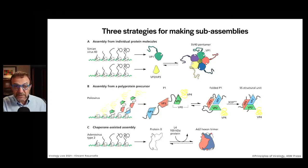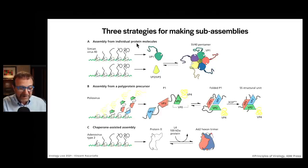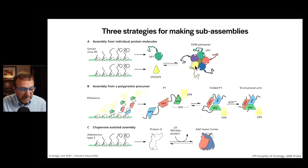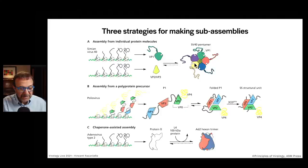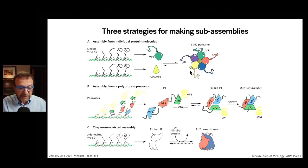You can make sub-assemblies in a number of ways in infected cells. Here we have the assembly of a sub-assembly from individual protein molecules. Here's an SV40 pentamer — five copies of VP1 — it's a sub-assembly because it's not the complete virus particle. It's made by producing individual copies of VP1 by translation of the mRNA on ribosomes, and those assemble. There's also another minor protein, VP2-3, which is in the middle of the pentamer, made separately.